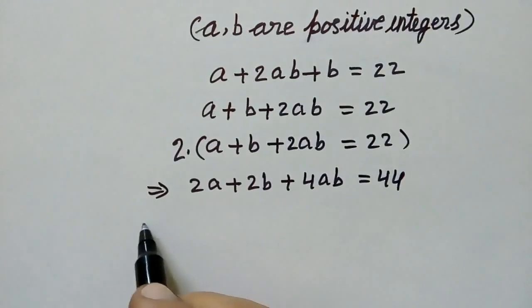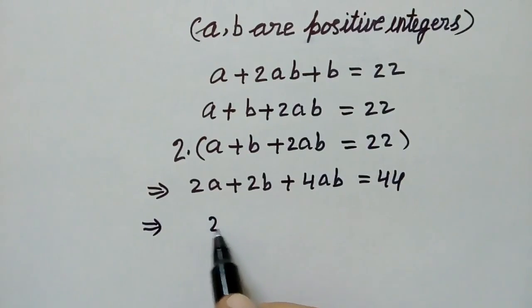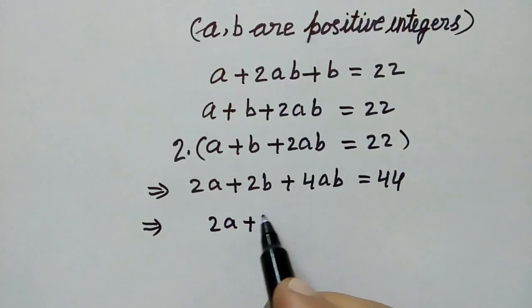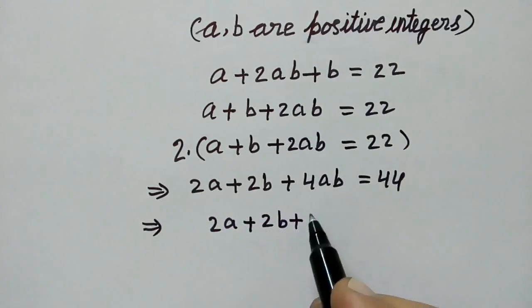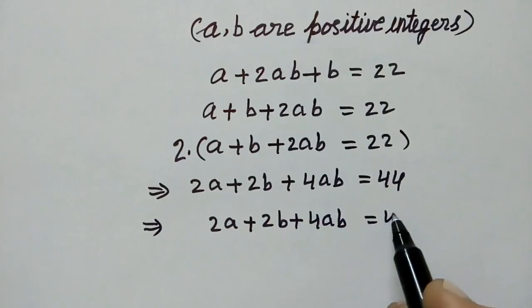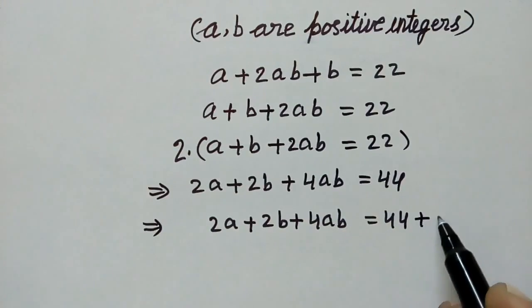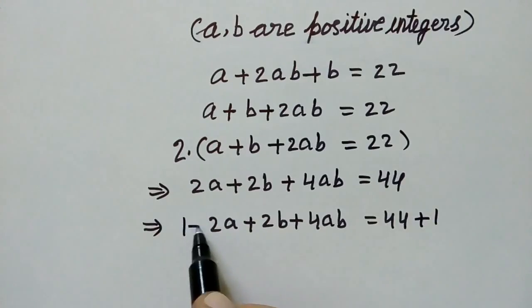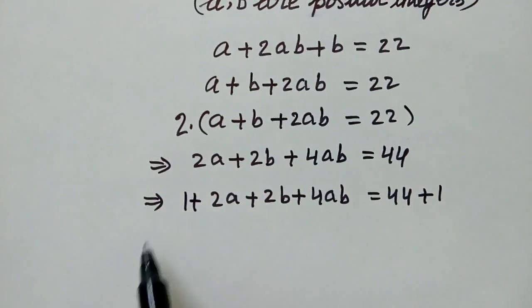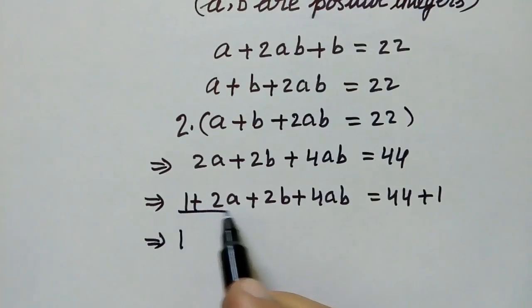In the next step, 2a plus 2b plus 4ab is equal to 44. Now we will add 1 to both sides, and then in the next step, we will take 1 as common.